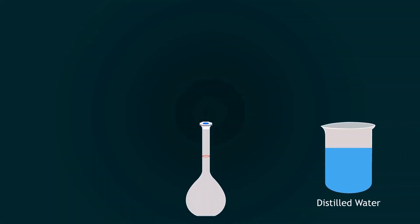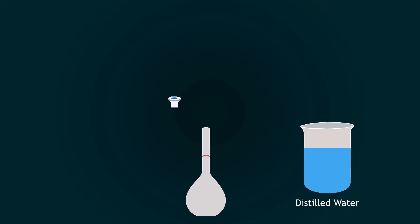First of all, take a 500 ml volumetric flask and add some distilled water into it with the help of funnel.